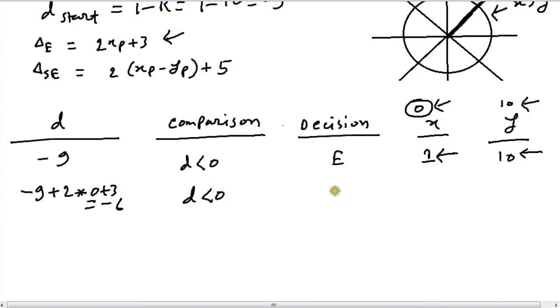So it's 2 into 0 plus 3 which gives us minus 6. Now d is still less than 0 and again choose E, and x goes up by 1, y remains the same. And again, our d increments. Looks like I made a pretty big mess. So it's minus 6 plus 2 into 1 because we are using this x value.